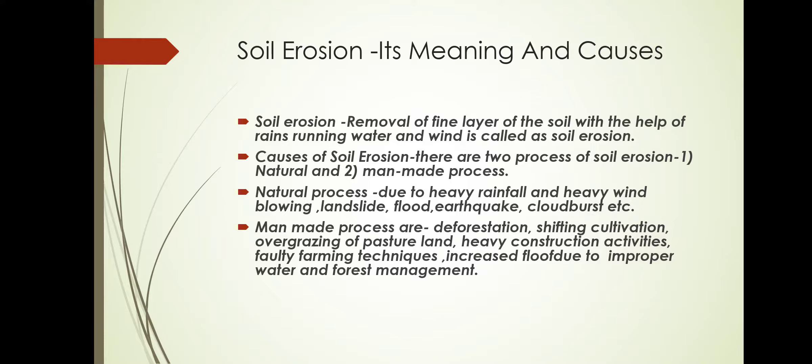The natural process includes heavy rainfall, heavy wind blowing, landslide, flood, cloudburst, and earthquake. All these natural disasters are the agents through which the soil is eroded.